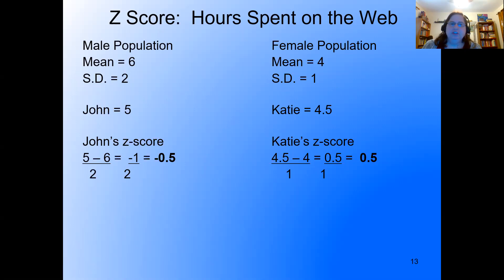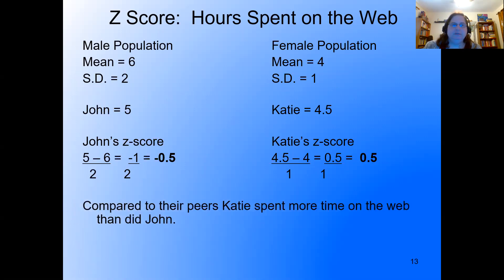Clearly, Katie uses the web more compared to her population than John does compared to his population. Compared to their peers, Katie spent more time on the web than did John.